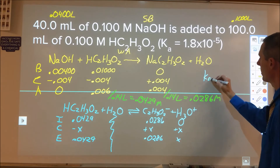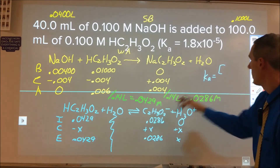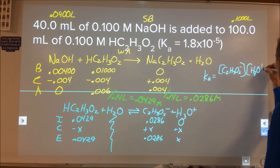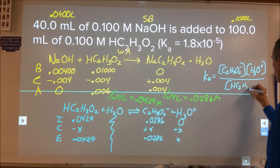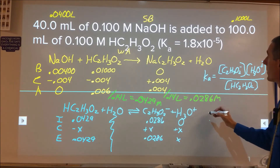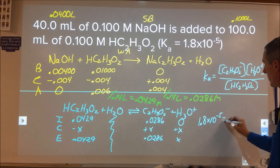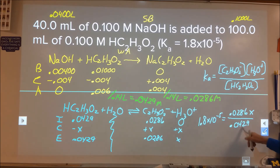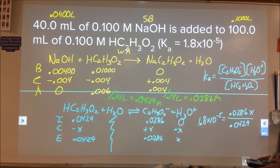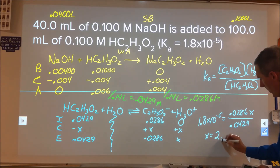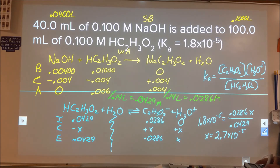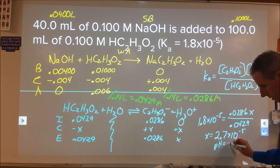The Ka expression is: Ka = [acetate][H3O+] / [acetic acid]. Plugging in: 1.8×10⁻⁵ = (0.0286 · x) / 0.0429. Solving: x = (1.8×10⁻⁵ × 0.0429) / 0.0286 = 2.7×10⁻⁵. Since x equals [H+], we take the negative log: pH = –log(2.7×10⁻⁵) = 4.57.